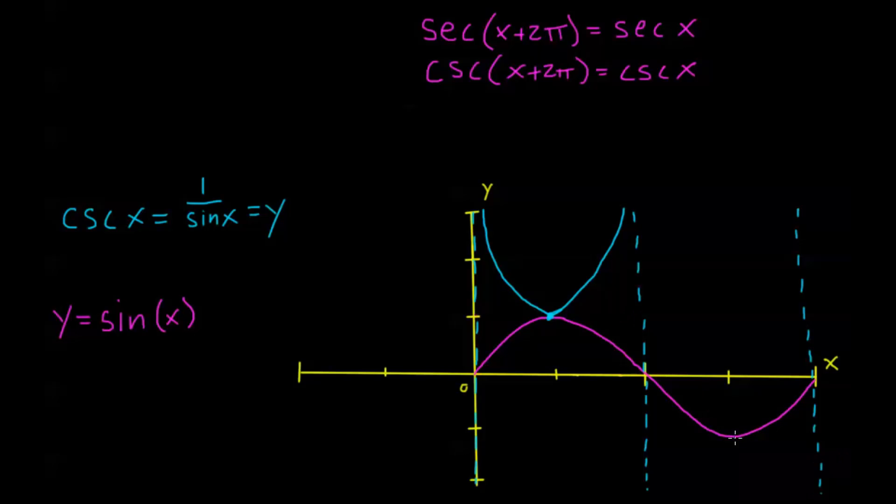Now when sine is negative 1, cosecant is 1 over negative 1, so it's also negative 1. So they're going to share this point down here as well. And as sine gets closer to 0, cosecant is going to get more and more negative. Sine is a negative number here, so as it's getting closer to 0, cosecant is becoming a larger negative number. So it's going to approach these asymptotes like this.